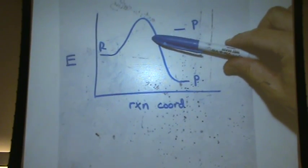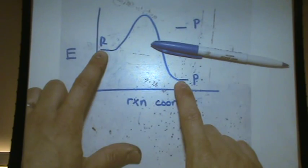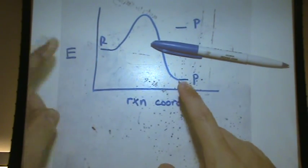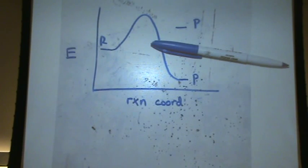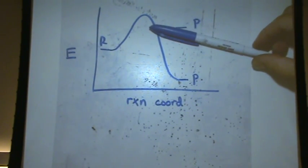The height of this peak, which is the activation energy. So, the difference between these two lines is the enthalpy, delta H, or delta U. The height of the peak is the activation energy, and that's kinetics. A kinetically unfavored reaction has a huge hill, unfavored. A kinetically favored reaction has a small hill.